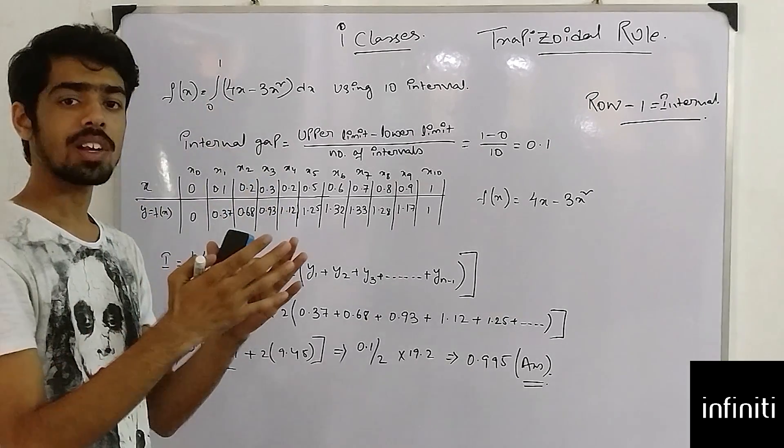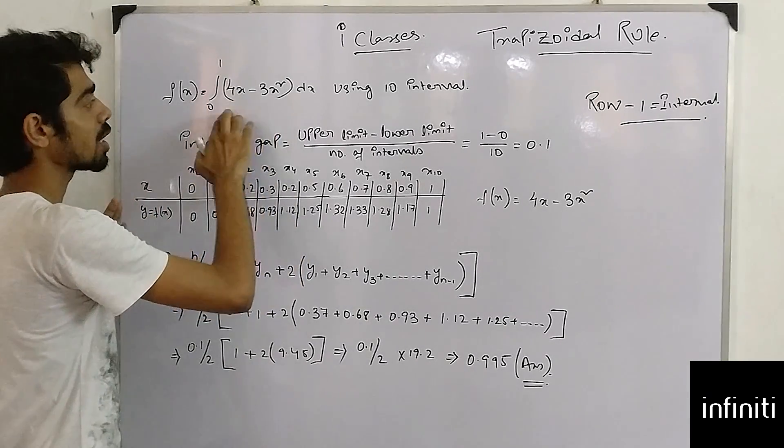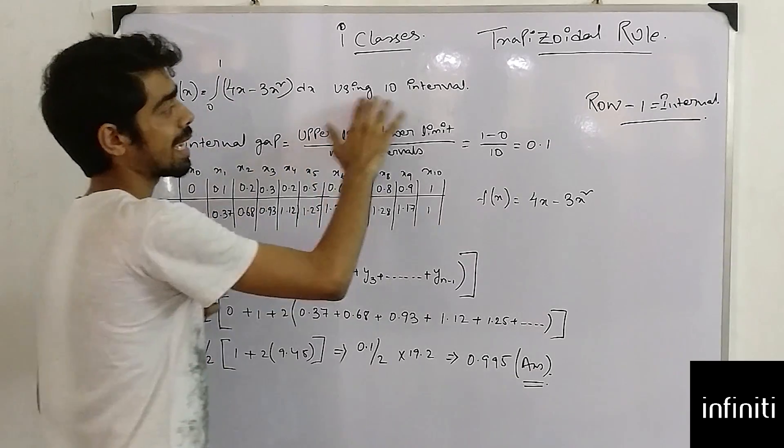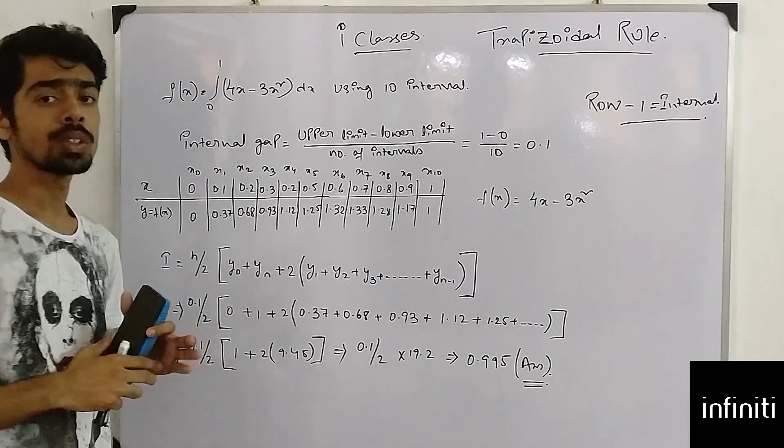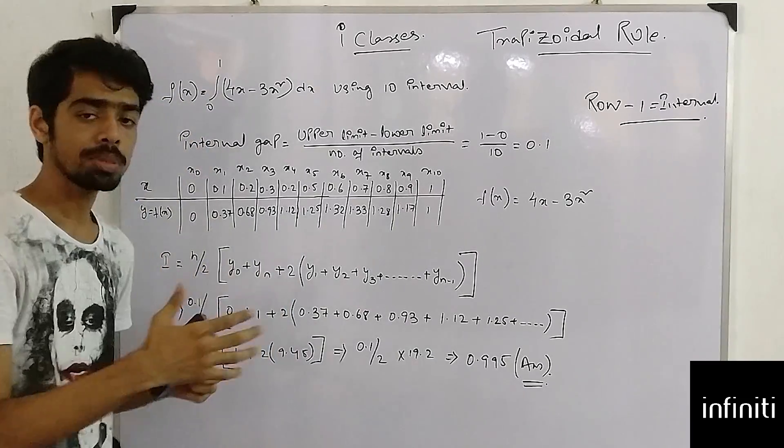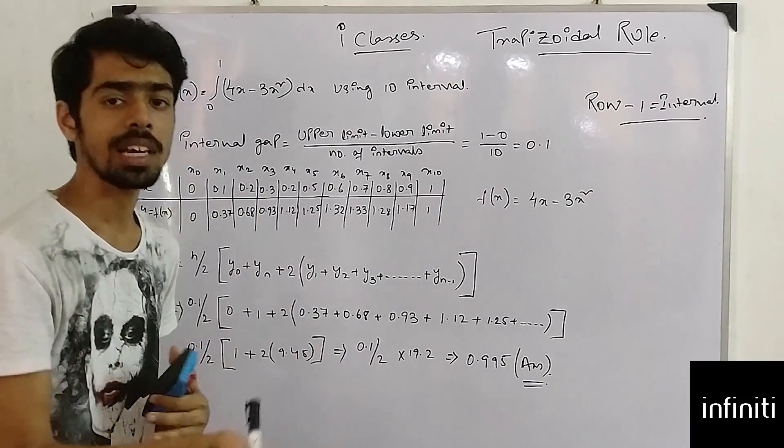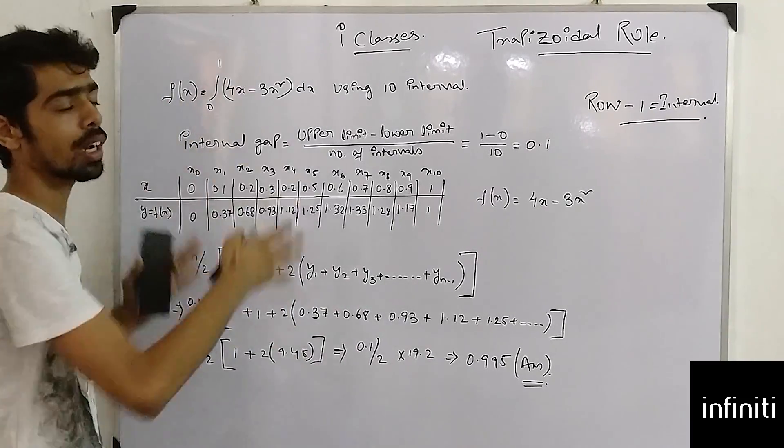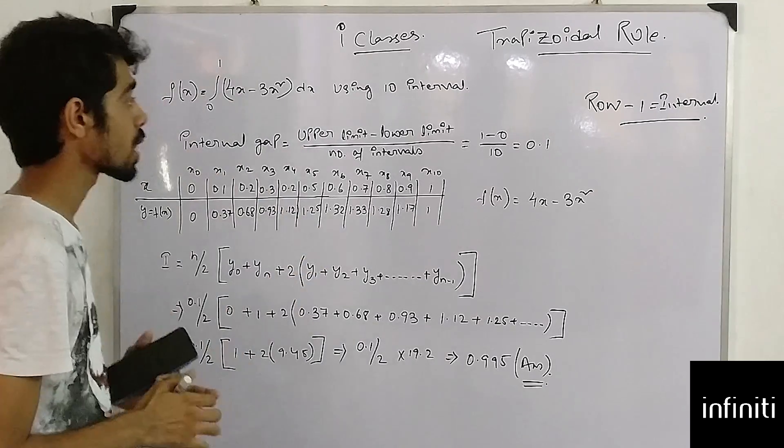given an integration value like I have to find the integration of this sum using 10 intervals, so I should use trapezoidal rule or there is one more rule which is Simpson's rule. For Simpson's rule we will discuss it in later classes, but today we are going to learn what is trapezoidal rule.